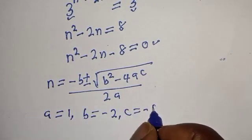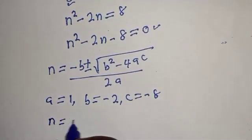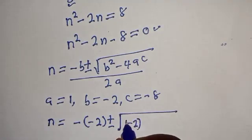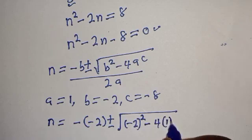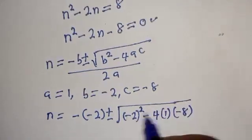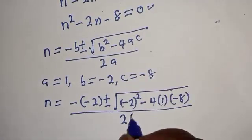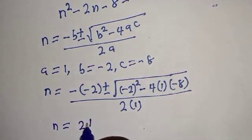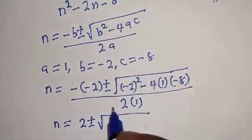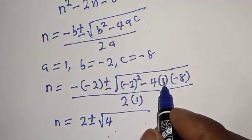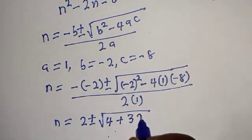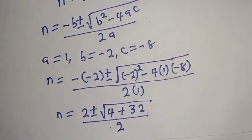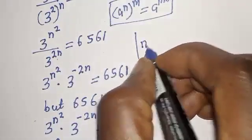So n equals minus bracket minus 2, plus or minus square root of minus 2 squared, minus 4 times 1 times minus 8, all over 2 times 1. This gives n equals 2 plus or minus square root of 4 plus 32, over 2.